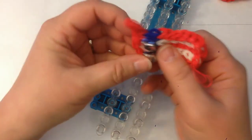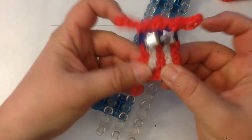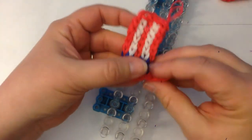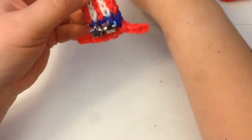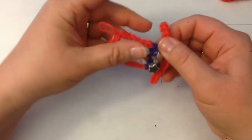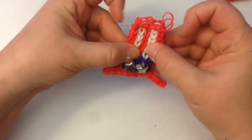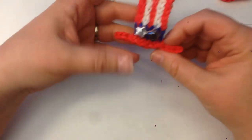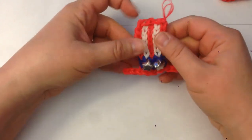Now we need to pull it into shape a bit. What you will find is that the bands tend to settle after a little while. So they look a bit odd when you first take them off the loom, but then after an hour or so, they tend to settle into a better shape. So there we go. There's a little hat.